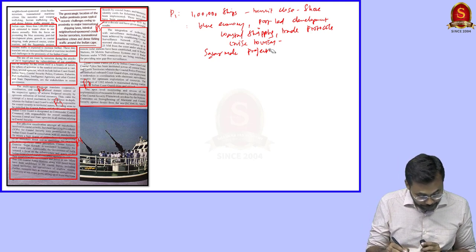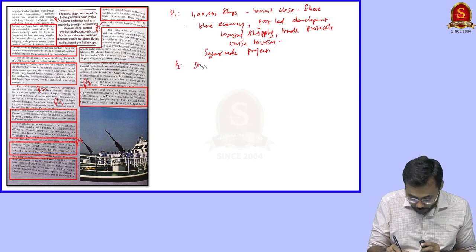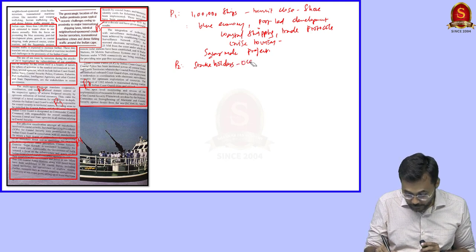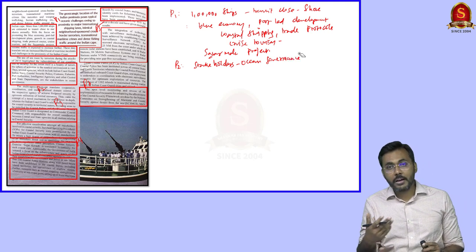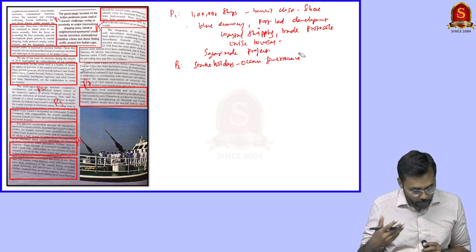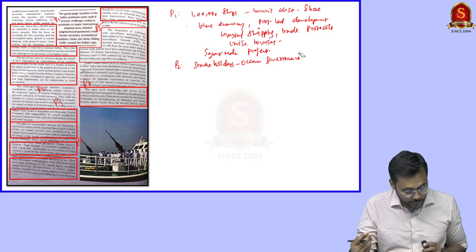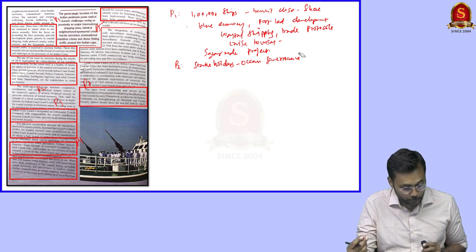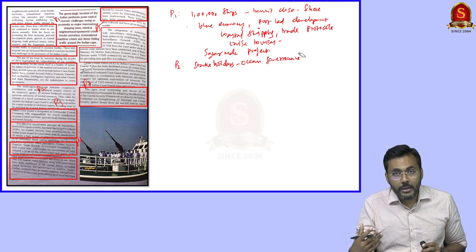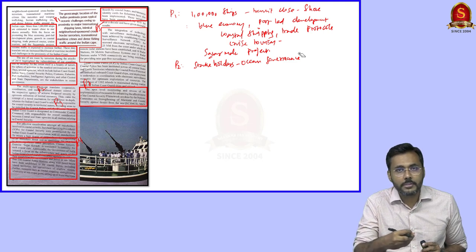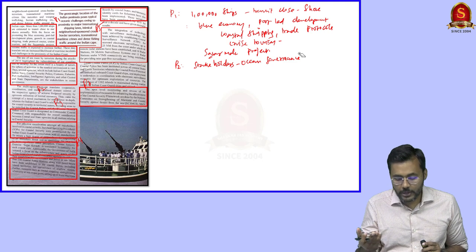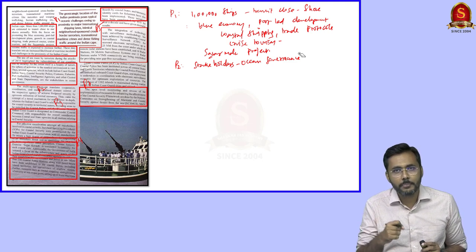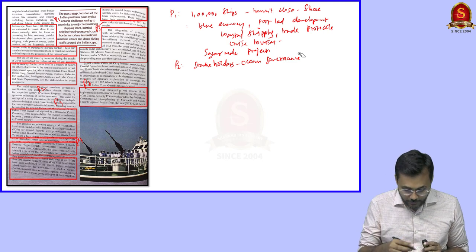Paragraph 2 speaks about stakeholders in ocean governance — the major players regarding maritime in India. These include Coast Guard, Indian Navy, Coastal Security, Customs, Fisheries, Coast Authority, Port Authorities, and Intelligence Agencies. They are the major stakeholders. Whatever happens in oceans has a direct impact on these institutions, and any decisions by the government regarding maritime involve them.